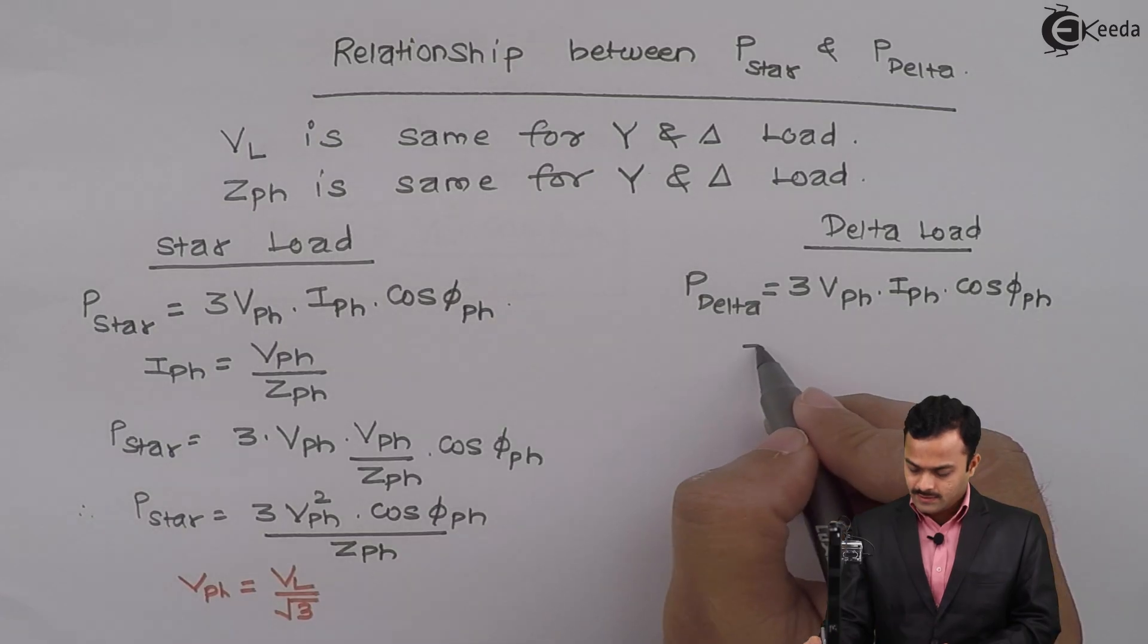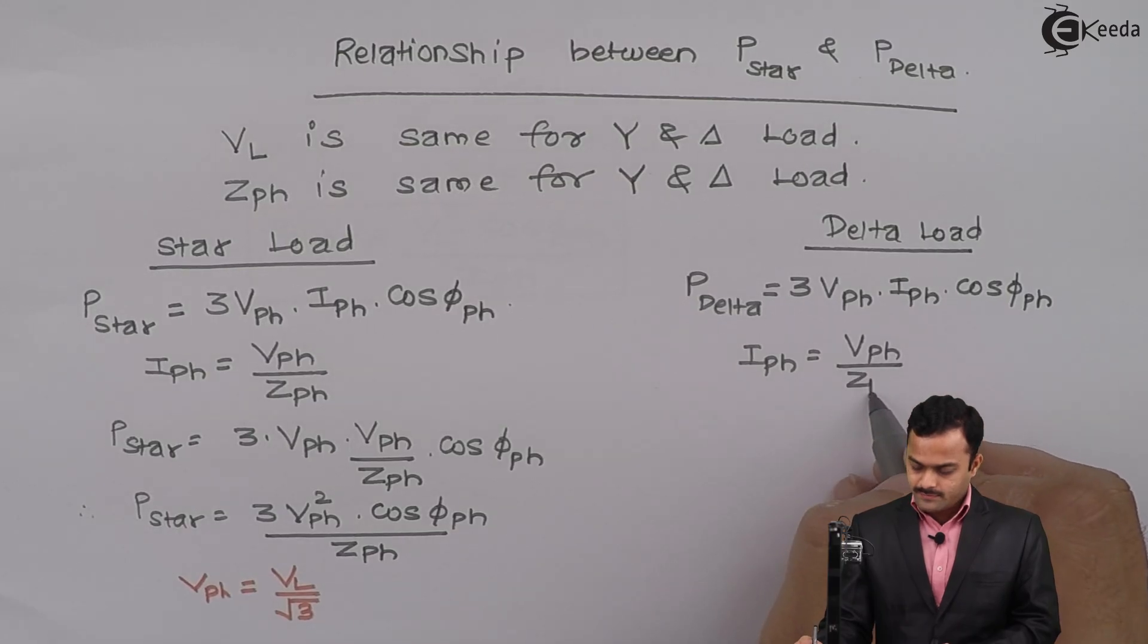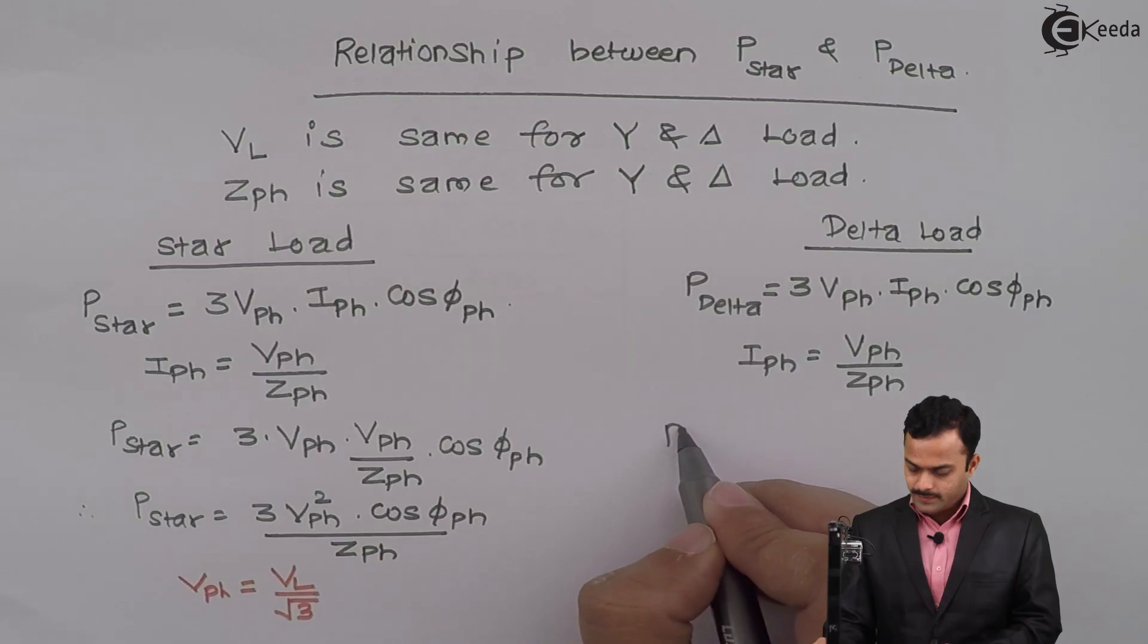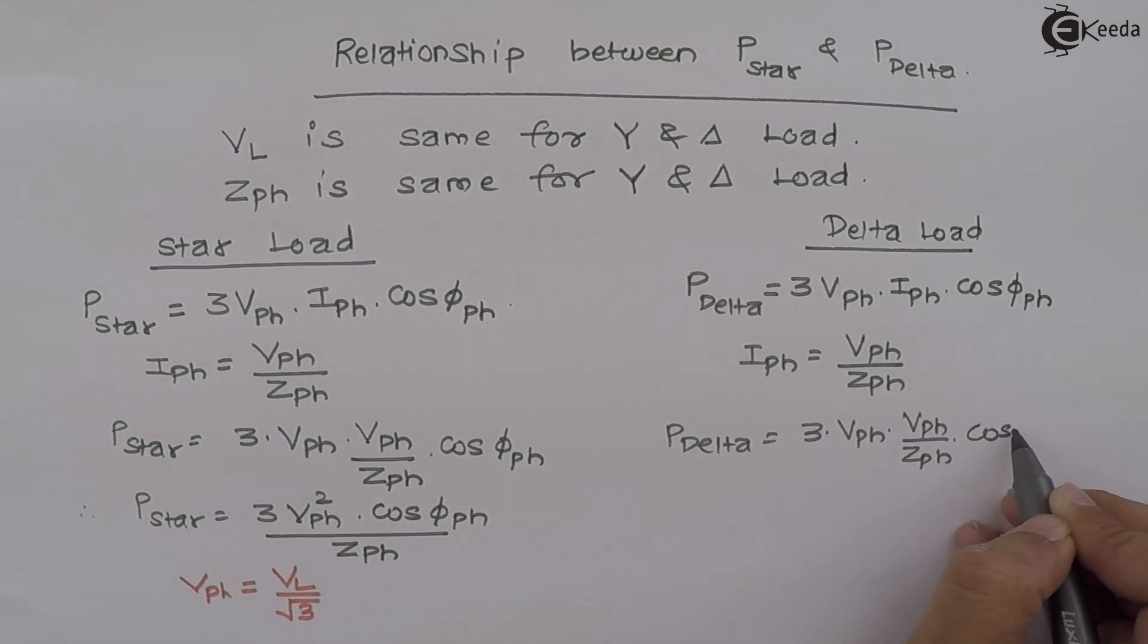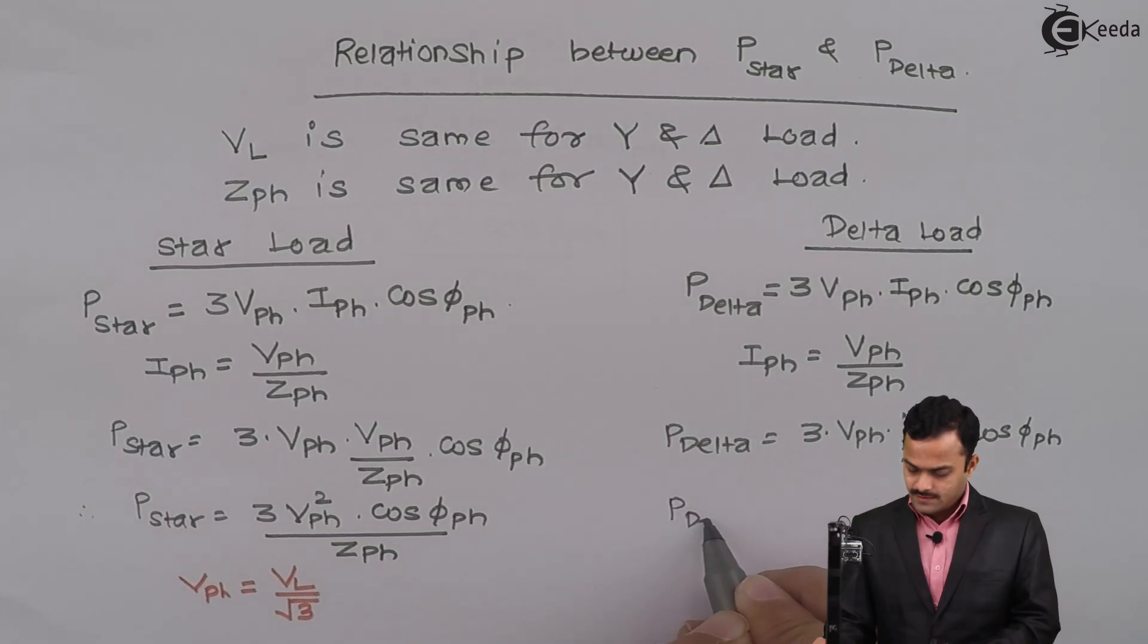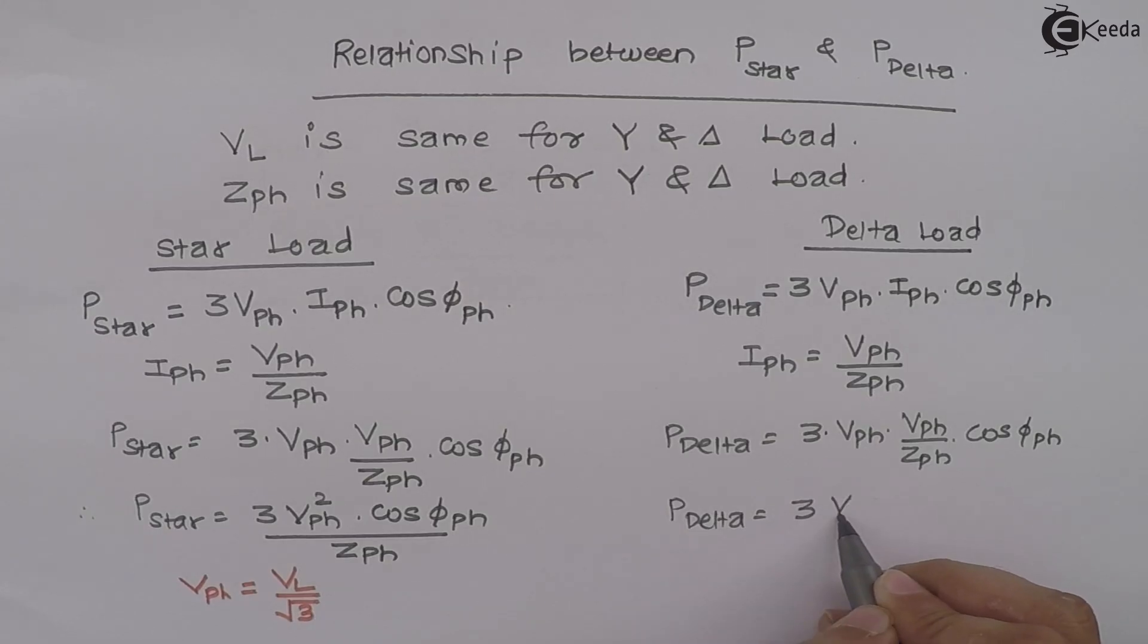Once again, same theory, that means phase current is nothing but phase voltage divided by phase impedance. So if I solve, I will get P delta as 3 VPH square upon ZPH multiplied by cos phi PH, same as P star till this point.